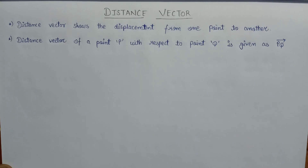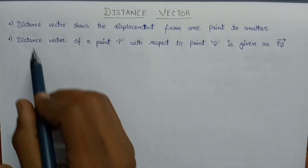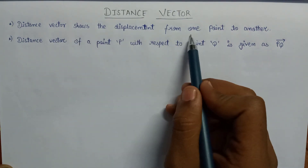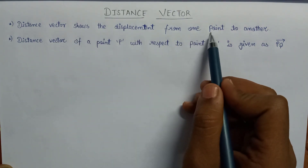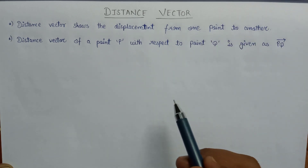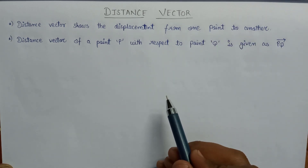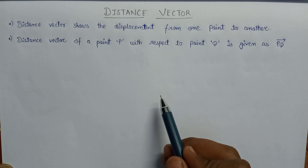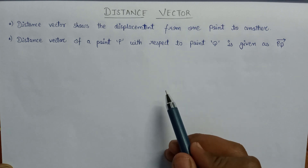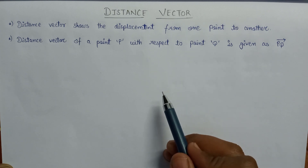Welcome. In this lecture, we are going to learn about distance vector. Distance vector shows the displacement from one point to another point. This is a type of vector which is used for representation of a displacement between two points.